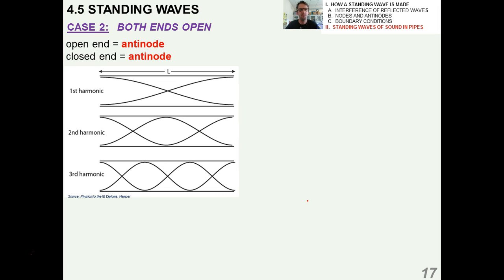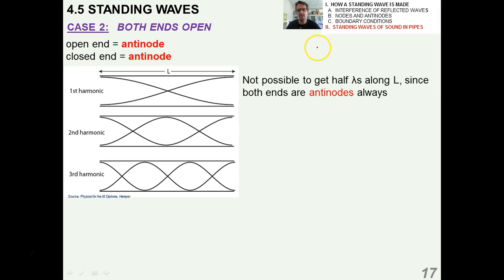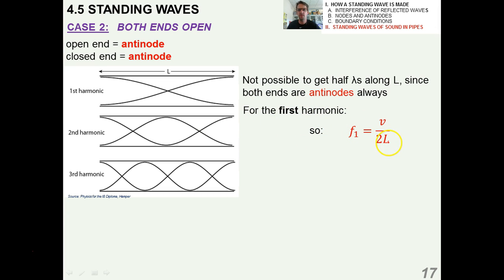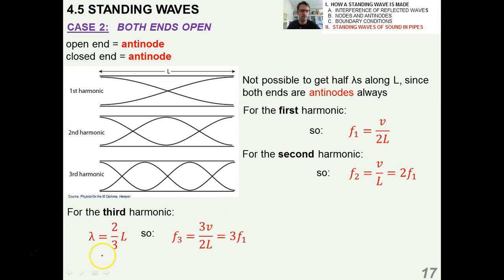What about a case where both ends are open? Then you would have an antinode on either end — and that is a set of boundary conditions we must take into account. It's not possible now to get half a wavelength along L because both ends are always antinodes. For the first harmonic, you have F1 equals V over 2L. For the second harmonic, it's 2 times F1, and so forth.